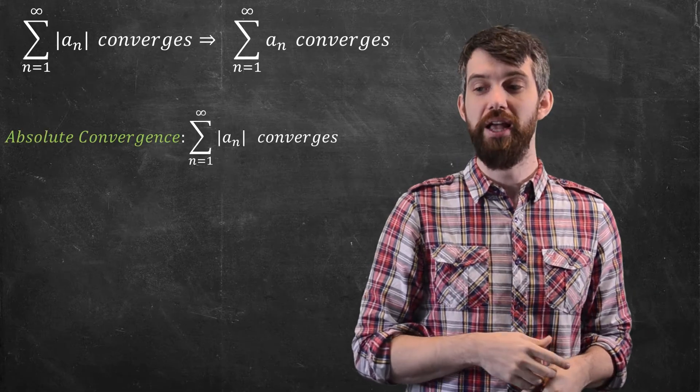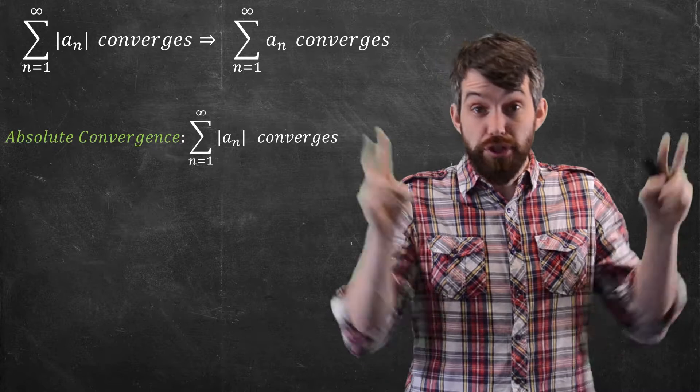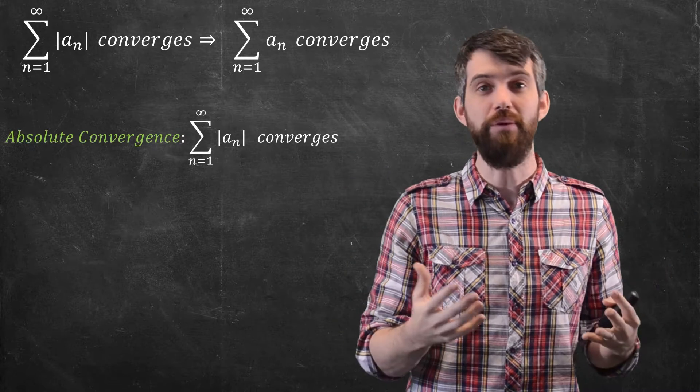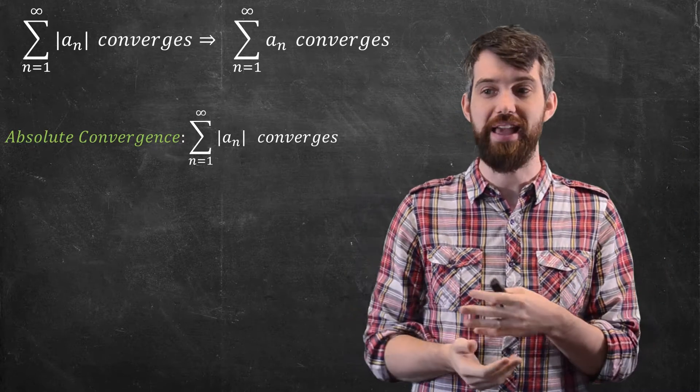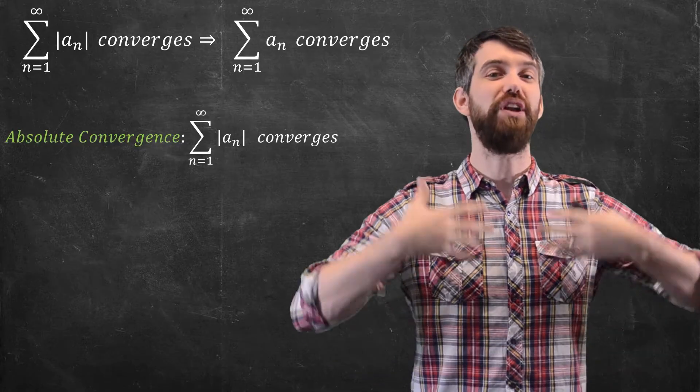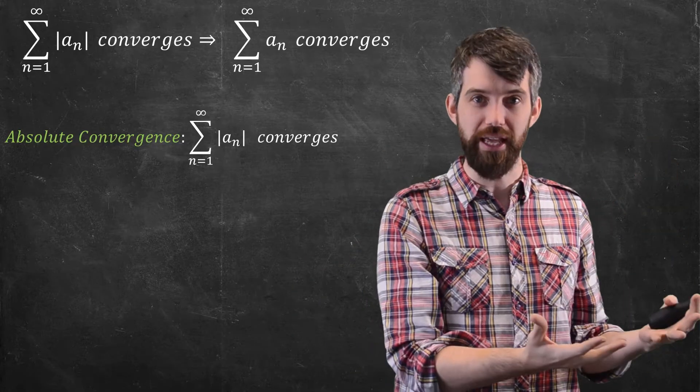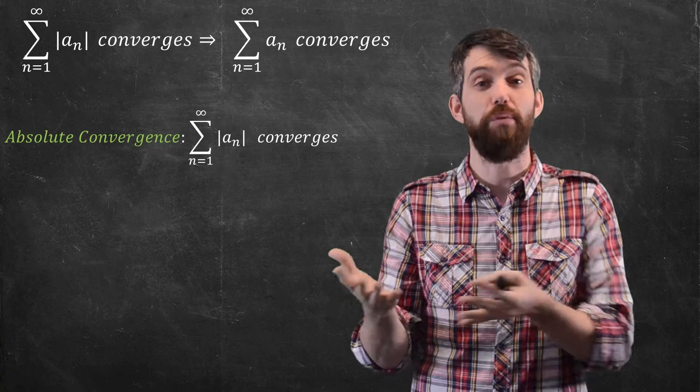Indeed, we have a little bit of terminology here. We'll say that absolute convergence is what we mean when we take the sum of the absolute value of a ns. So another way to say this is that if it converges absolutely, then it converges in the normal sense.